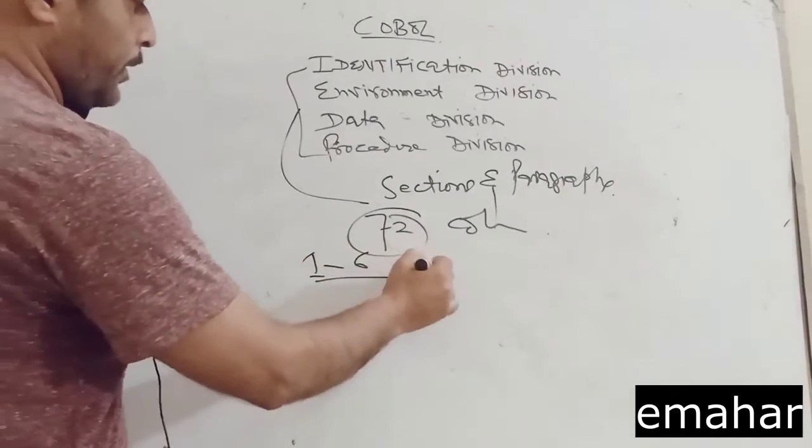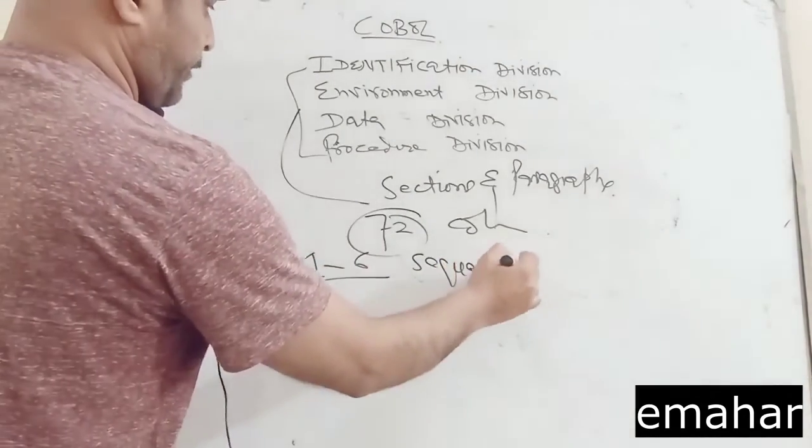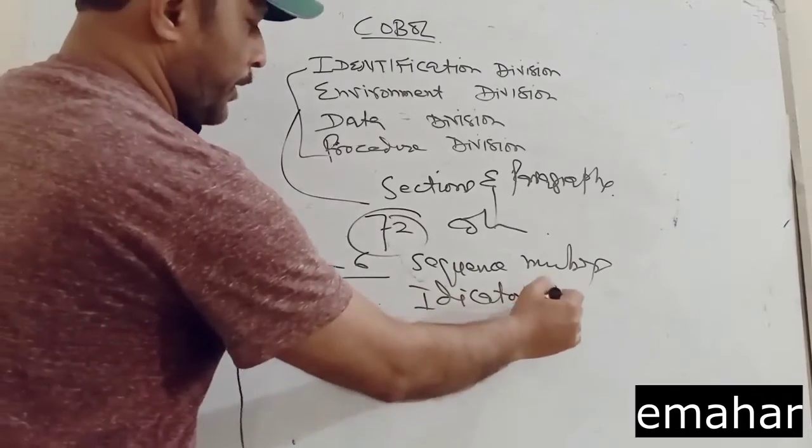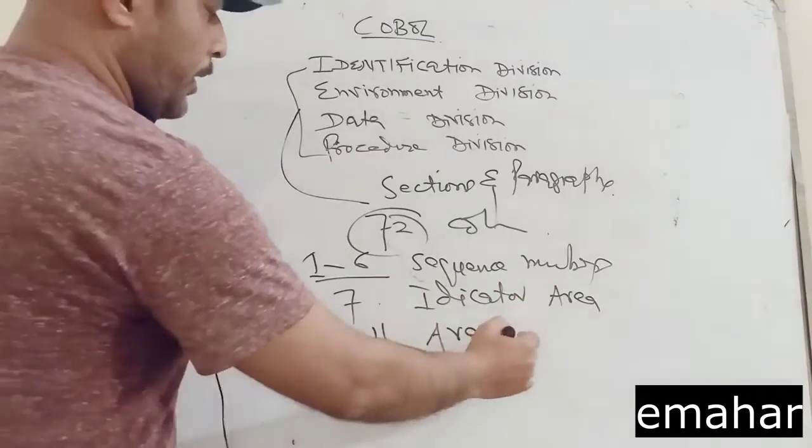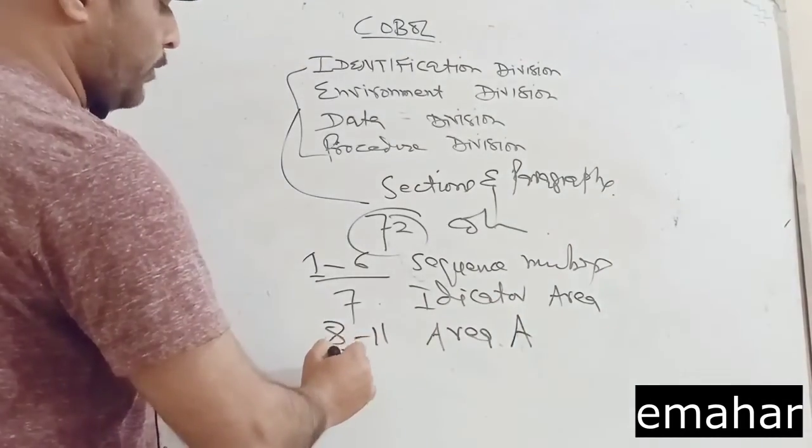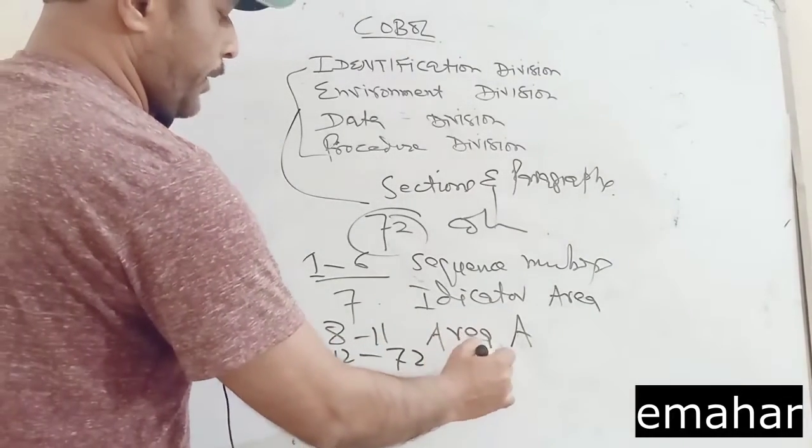Column 1 to 6, sequence number. Column 7, indicator area. Column 8 to 11, area A. Column 12 to 72, area B.